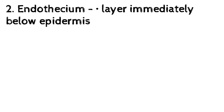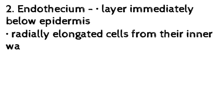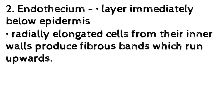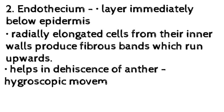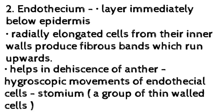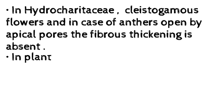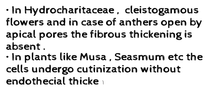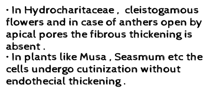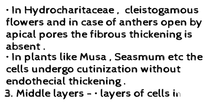2. Endothecium — the layer immediately below the epidermis. Radially elongated cells from their inner walls produce fibrous bands which run upwards, helping in dehiscence of the anther through hygroscopic movements of endothecial cells. The stomium is a group of thin-walled cells. In Hydcharitaceae and cleistogamous flowers, and in anthers that open by apical pores, the fibrous thickening is absent. In plants like Musa and Sesamum, the cells undergo cutinization without endothecial thickening.